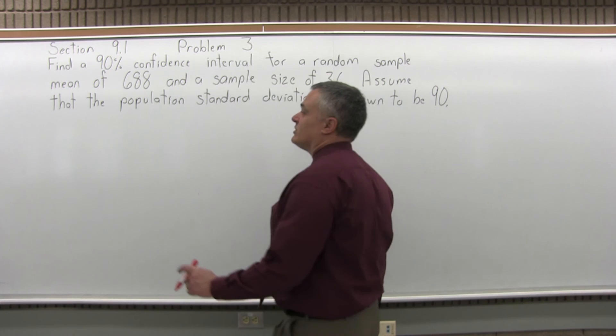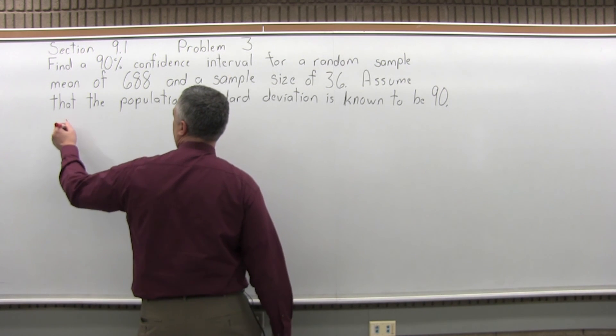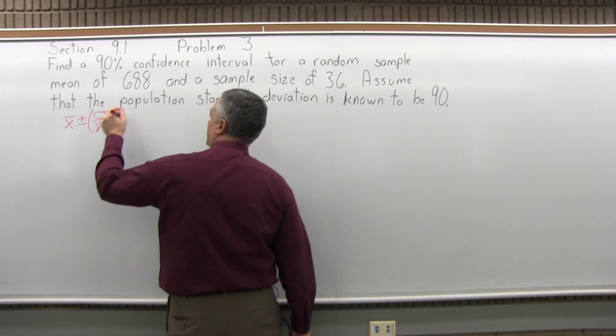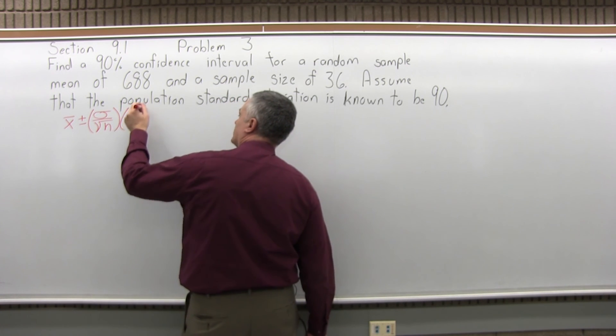So if we have to find the confidence interval, you're going to use the confidence interval formula, which is x bar plus or minus sigma, the standard deviation, over square root of n, the sample size, times z sub c, your confidence coefficient.